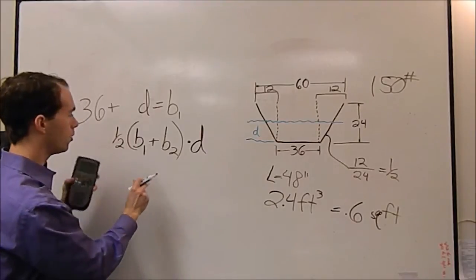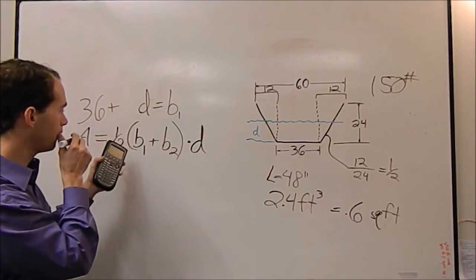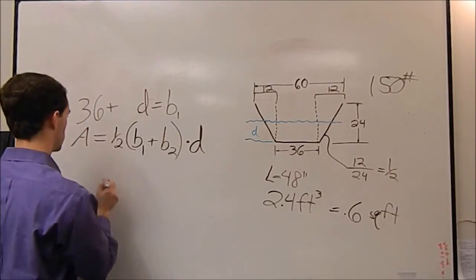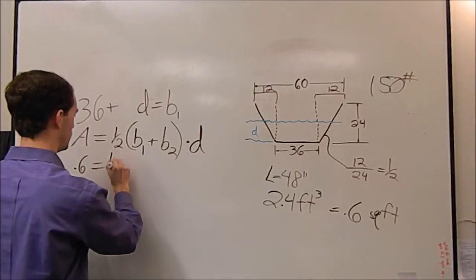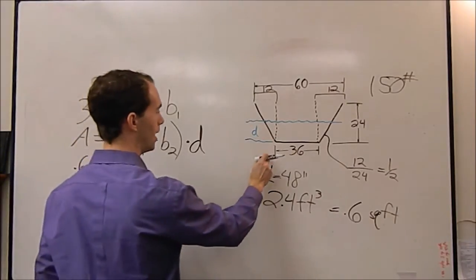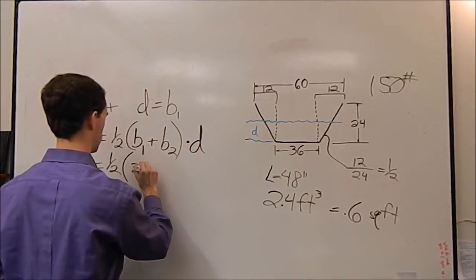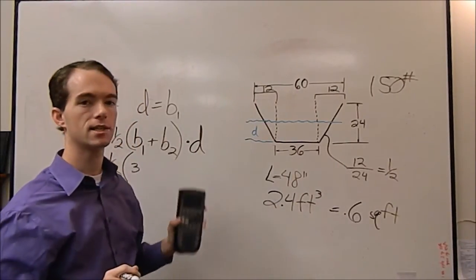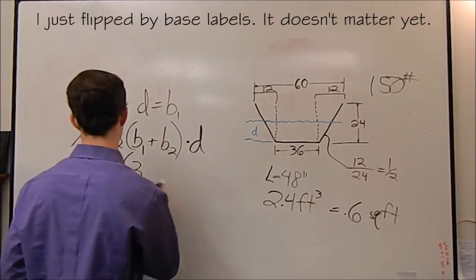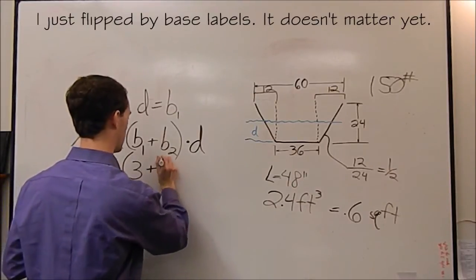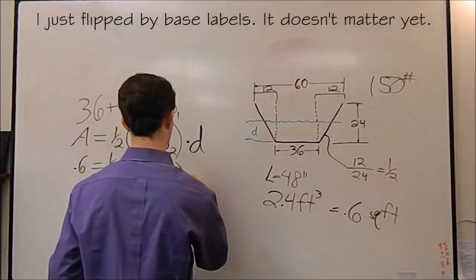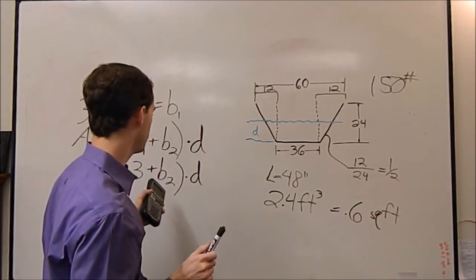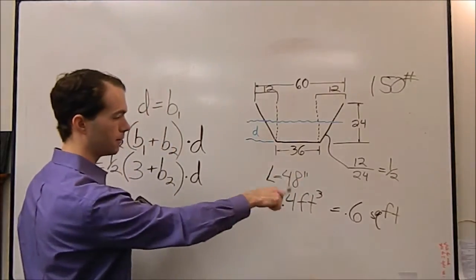Okay, we know this is area, our equation over here. One half of the base 1 plus base 2 times our depth. We know that this equation has to equal 0.6. So, we can solve for all this. One half base 1 is going to be 36. I just about got tripped. This 0.6 is in square feet. This 36 is in inches. We need to convert everything to be the same. That's 3 feet. We want to do everything in feet at the moment. 3 plus base 2, which we don't know yet, times d. What we have to do, obviously, is get base 2 in terms of base 1. That's why we did that whole slope thing over there.